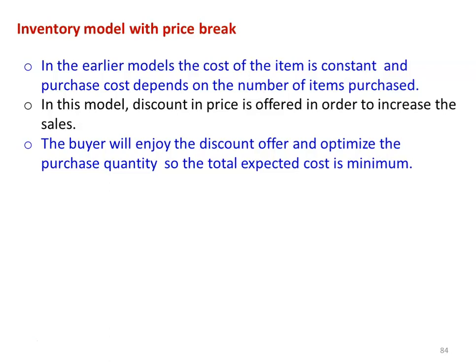In the earlier models, the cost of the item is constant. In the probabilistic model and the deterministic model, the cost of the item is constant and the purchase cost depends on the number of items purchased. So when you purchase a smaller quantity, the total cost of the purchase will be less; when you purchase a larger quantity, the cost of the total purchase is higher. In this model, a discount in price is offered in order to increase the sales.